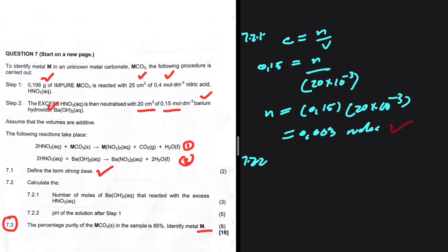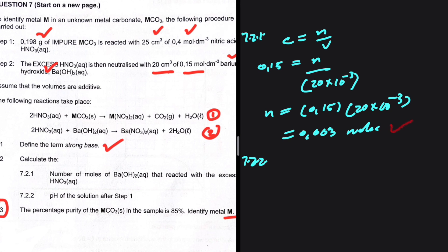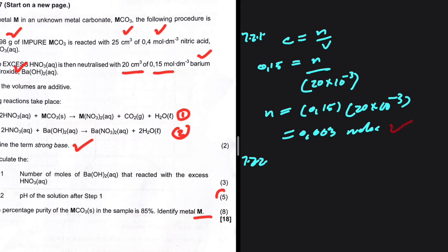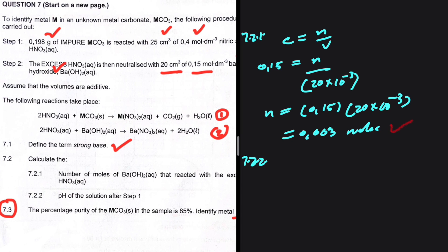In 7.2.2, we want to find the pH of the solution after step 1 — that's worth 5 marks. In 7.2.1 we calculated the moles of barium hydroxide used to neutralize HNO₃. With those moles of barium hydroxide, we can calculate the moles of HNO₃ that were in excess. Then with those moles, we can find the concentration and calculate the pH.